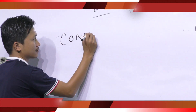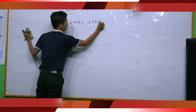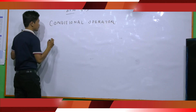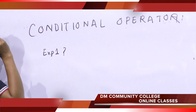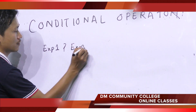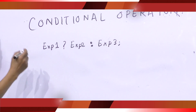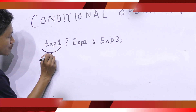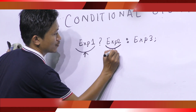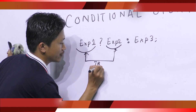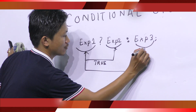Next is the conditional operator. Conditional operators take the form: Expression1 ? Expression2 : Expression3. First, it evaluates Expression1. If it is true, then Expression2 is evaluated. Otherwise, if it is false, then Expression3 is evaluated.